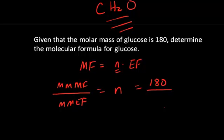Looking at this empirical formula, I calculate 12 plus 2 plus 16 is 30, so the molar mass is 30. So 180 divided by 30 equals 6. The molecular formula then equals 6 times the empirical formula.